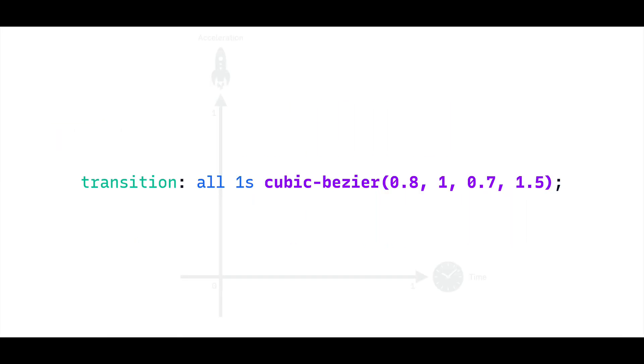Now, here's an important point. Notice how our second handle's y-coordinate has a value of 1.5? This causes the animation to push up or pop beyond the limit of 1 on our graph. But take note.